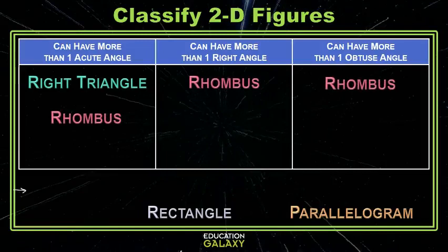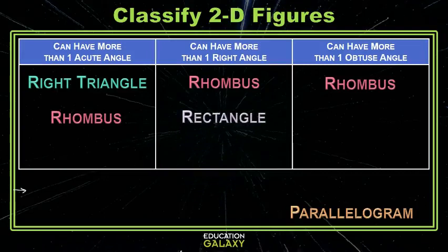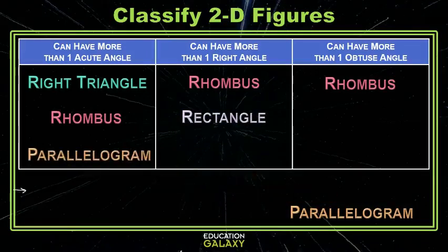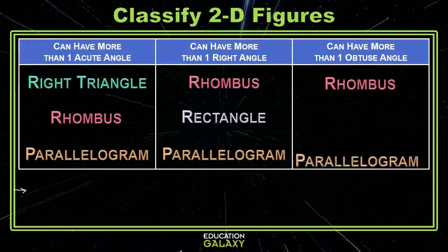A rectangle has four right angles. So by definition, it has more than one right angle, but that's the only type of angle it can have. And then a parallelogram can be many different things like a rhombus. It can have more than one acute angle, it can have more than one right angle, and it can have more than one obtuse angle.